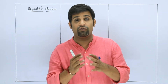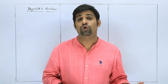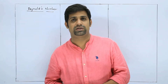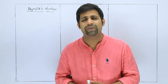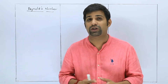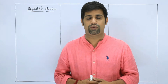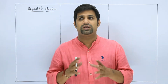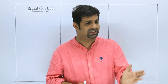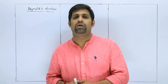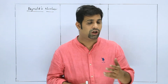Basically, velocity of flow decides which type it is — whether it is streamlined or turbulent. There are two types: one is streamlined flow, the other one is turbulent flow. If there is a fluid flow, then it is either streamlined flow or turbulent flow.